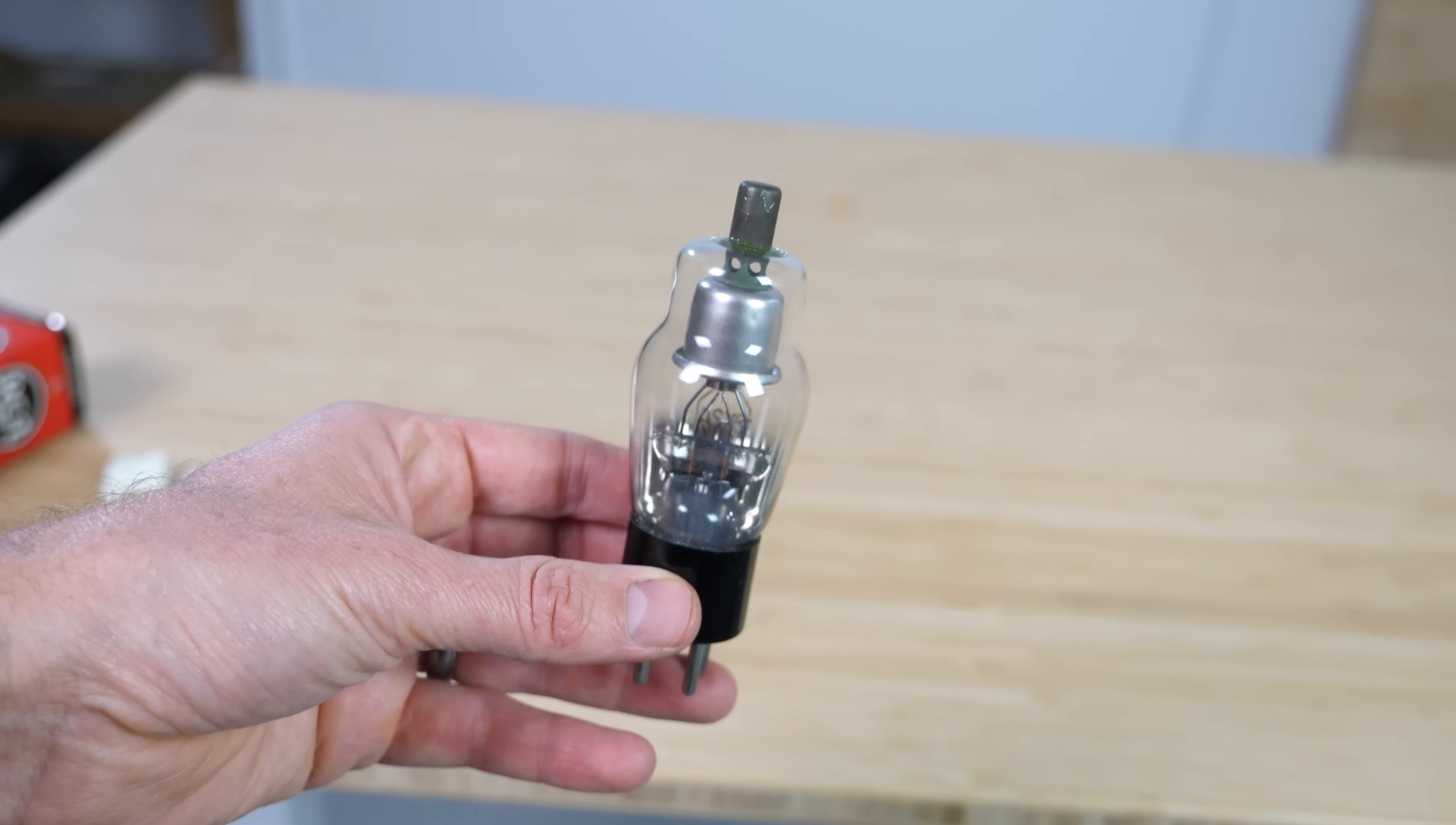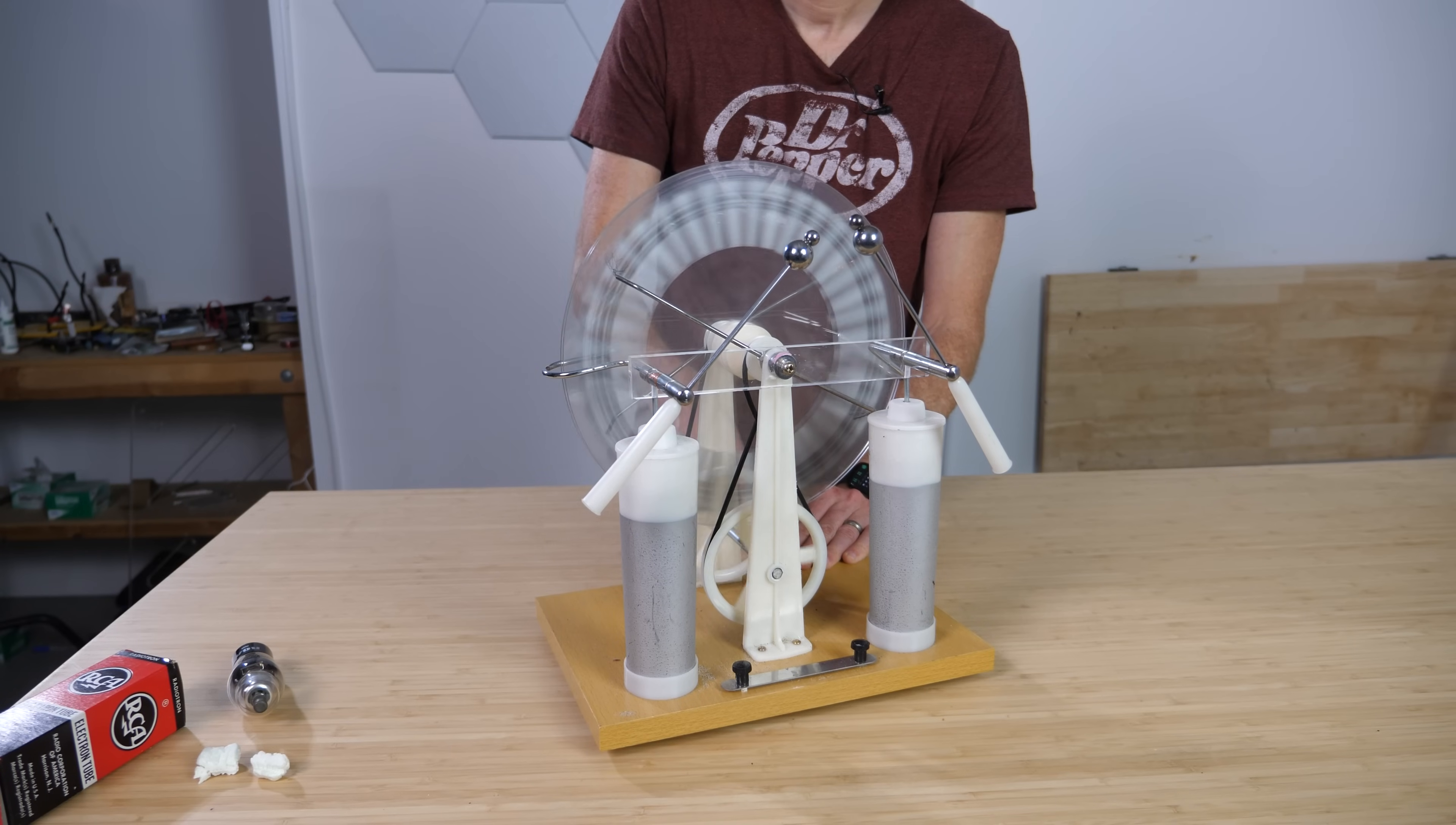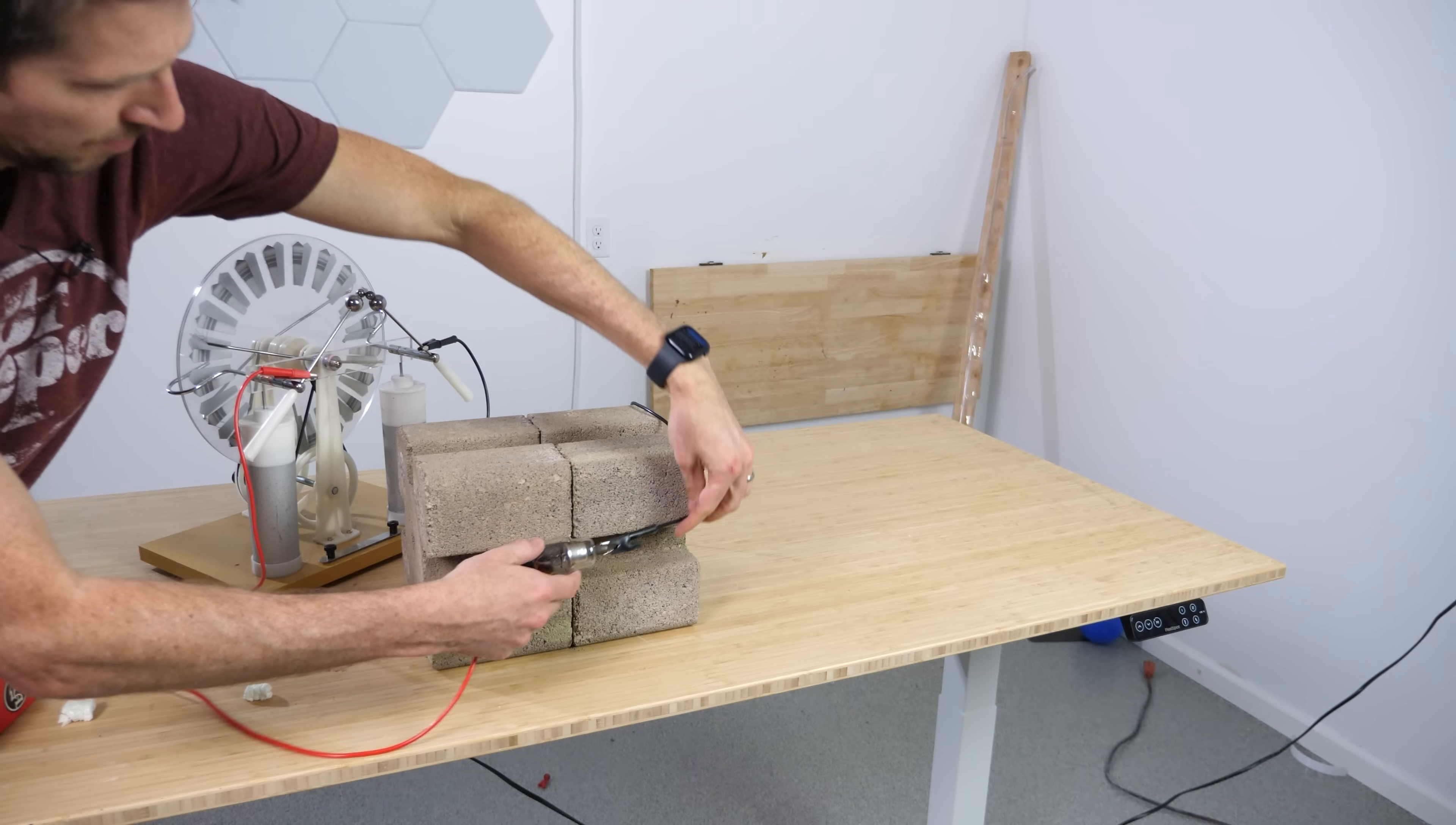So to make X-rays, I'm using this old rectifier bulb. Inside it's a vacuum with a pointed electrode and another electrode with a gap between them. When I crank up my Wimshurst machine, which makes tens of thousands of volts, electrons actually fly off that electrode super fast. And when they slam into any atoms along the way, they shoot off an X-ray.